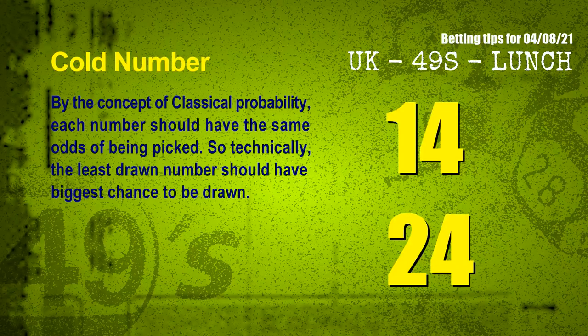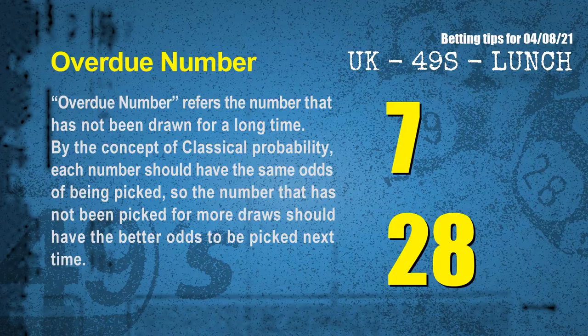In the end of this video, we have two more tips: cold numbers and overdue numbers. By the concept of classical probability, each number should have the same odds of being picked, so the least drawn number should have the biggest chance to be drawn. We count thousands of results and find the coldest two numbers for the next draw will be 14 and 24. The final tip is overdue numbers — a number that has not been drawn for a long time should have better odds to be picked next time. The most overdue two numbers are 07 and 28.